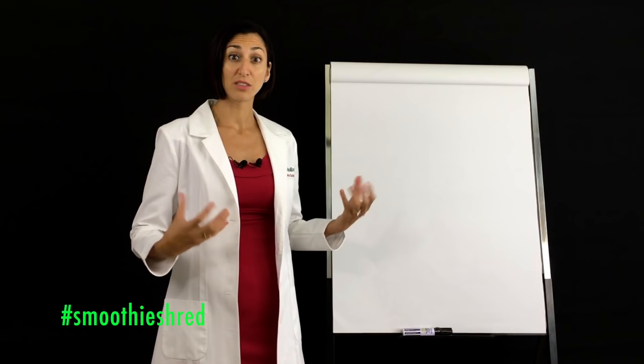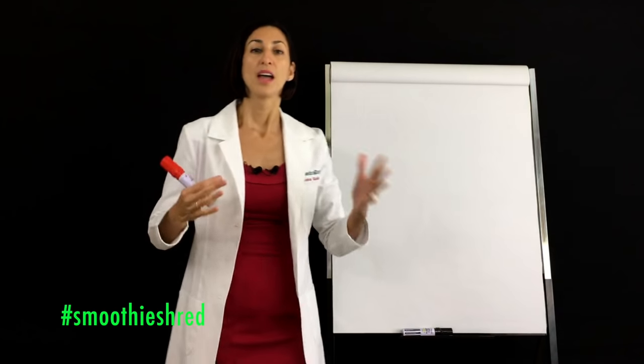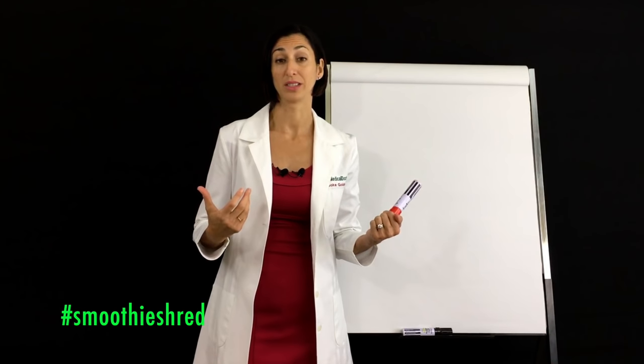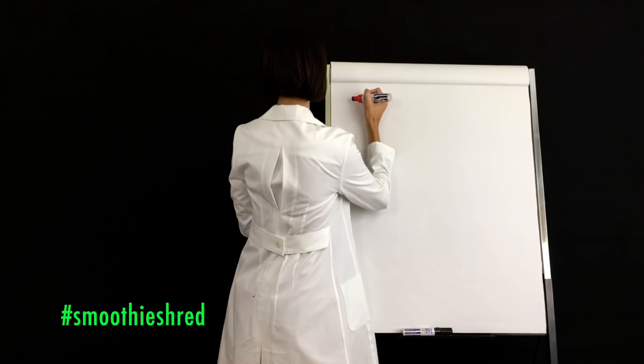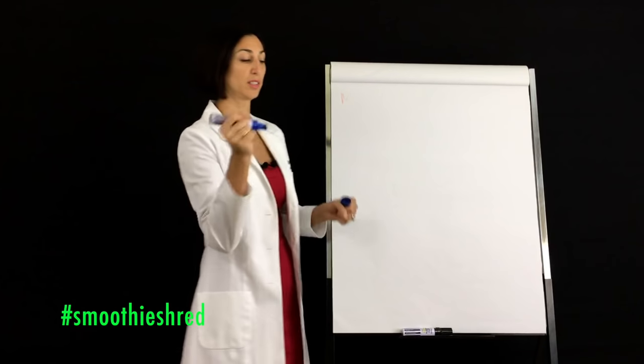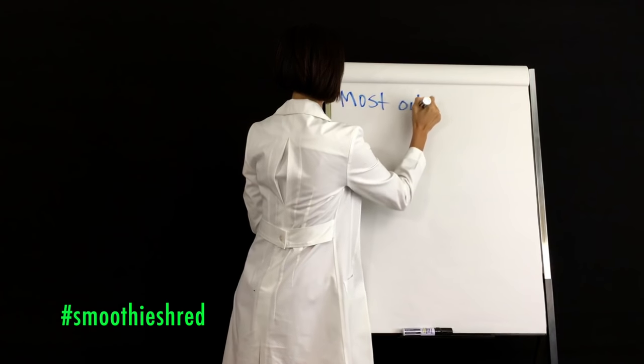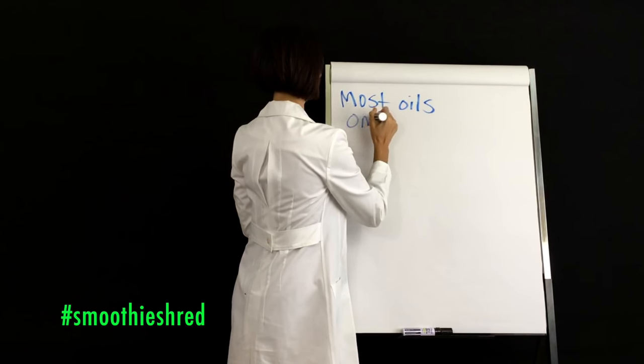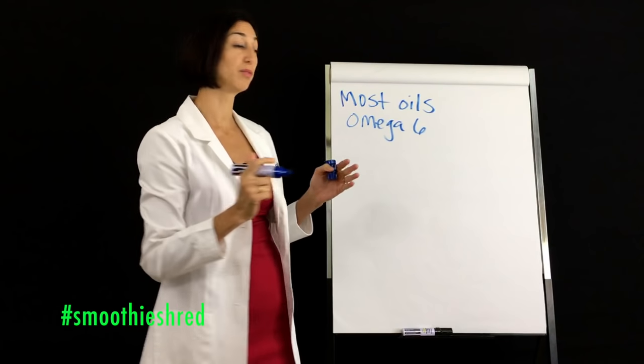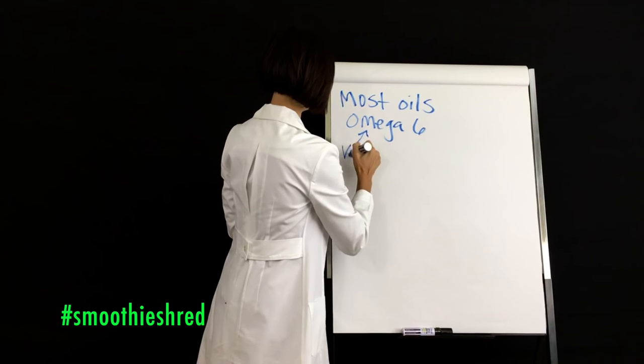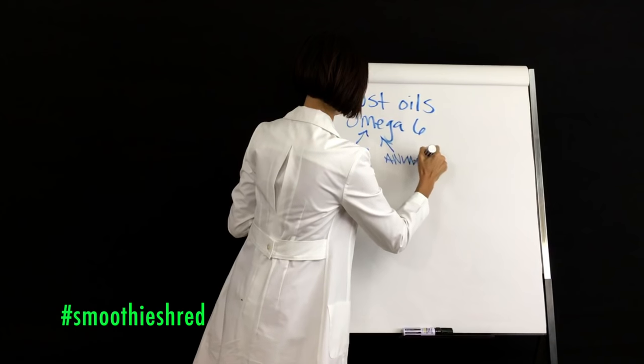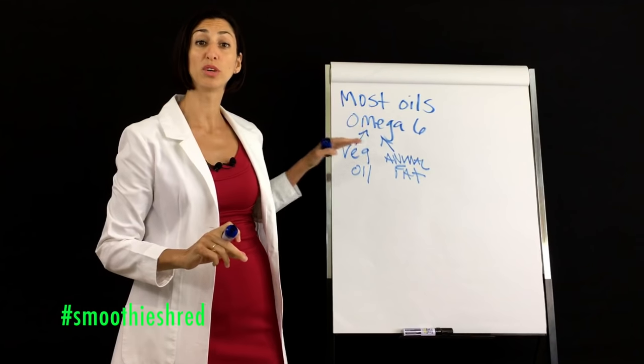So fats, there's different kinds of fats. What happens when you eat fat? There's different kinds of fats or oils, I'm going to call them oils. Now, most oils are actually bad for us when we consume them. Most oils have something called omega-6. Omega-6 is really bad for us. Omega-6 comes from vegetable oils and animal fats.